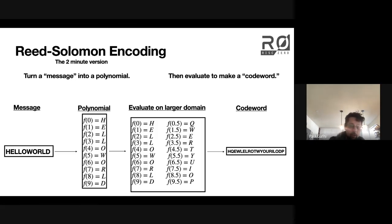You start with a message, you form a polynomial based on that message, you evaluate on some larger domain, and now you have a codeword.